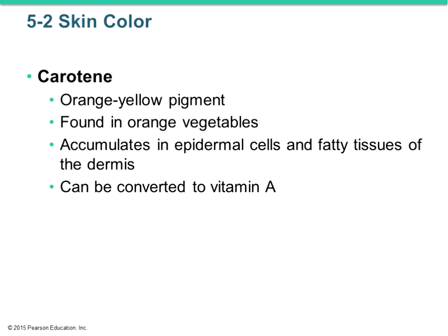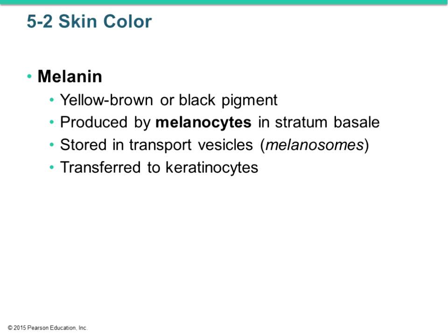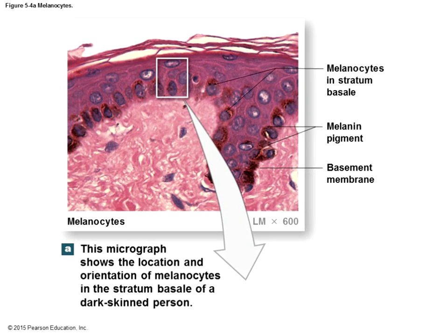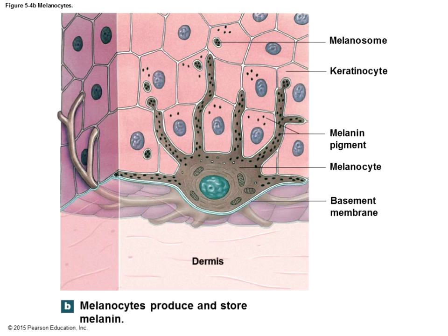The first pigment is carotene — an orange-yellowish pigment found in orange vegetables like carrots, squash, and peppers. If you eat enough of these, the carotene can accumulate in epidermal cells and fatty tissue, giving your skin an orangish hue. The other pigment is melanin — a yellow-brown or blackish pigment produced by melanocytes, which are located in the stratum basale. Melanin is stored in transport vesicles called melanosomes and transferred into the keratinocytes.